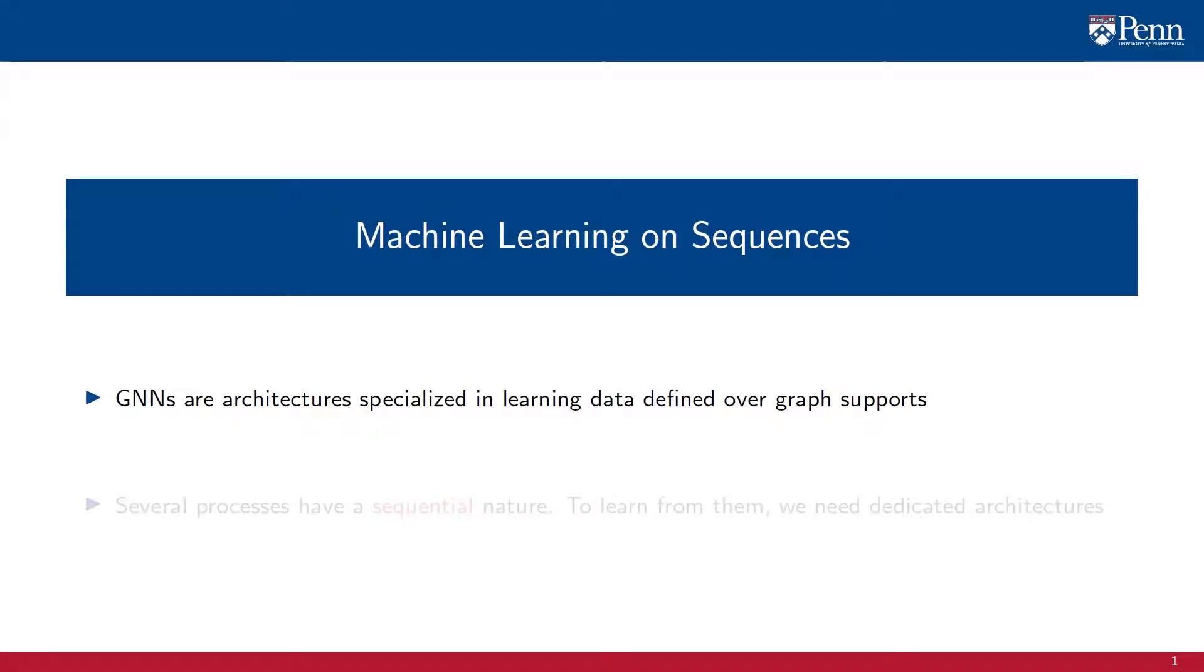Graph neural networks extract information from data encoded on graphs. They are able to exploit underlying regularities in the data structure to create architectures that are stable, scalable, and invariant to permutations.